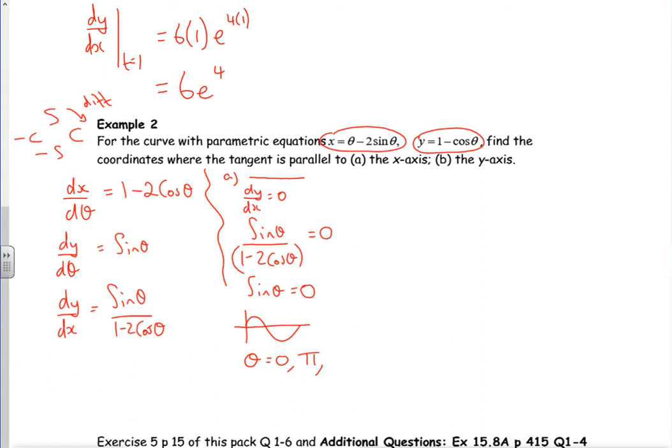Now then, what I need to do now—you've got to remember that isn't the x and y value, this is the θ value there. So I need the coordinates that go with them. So if I look at when θ is zero, I've got x is zero minus 2 lots of sine zero, so that is going to be zero.